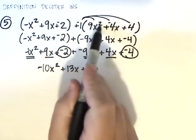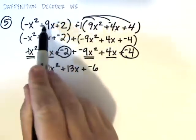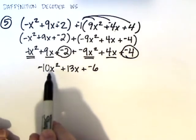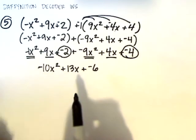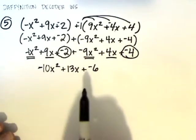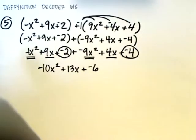So, we combined these two trinomials. We subtracted this trinomial from this one. And what we ended up with is this. Now, one thing you need to remember on this Daffinition Decoder worksheet when you're looking for the answer, it may not look exactly like this. Do you know what might be different?